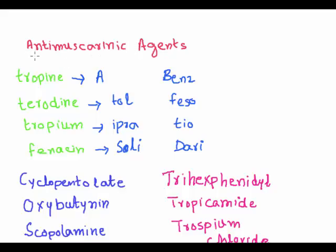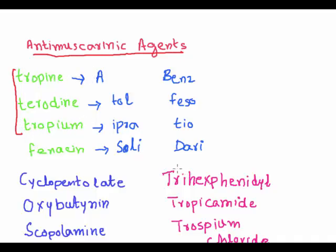Anti-muscarinic agents are the class of anticholinergic drugs. To remember the anti-muscarinic agents, we use six T's — three T's in one group and three T's in another — starting with atropine.